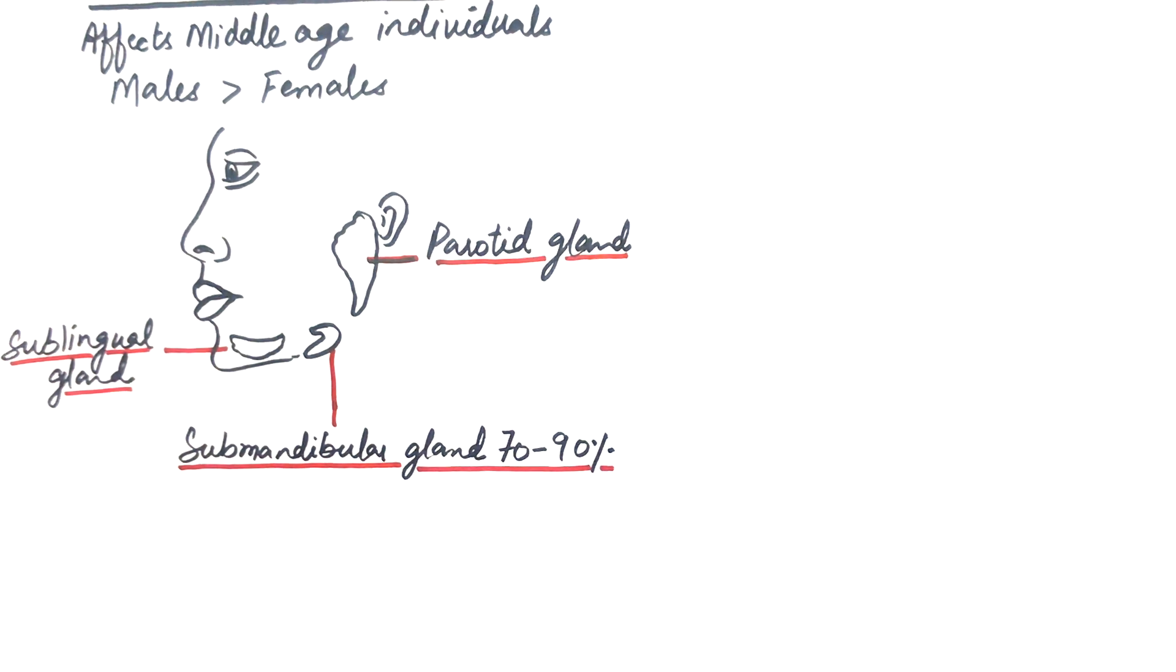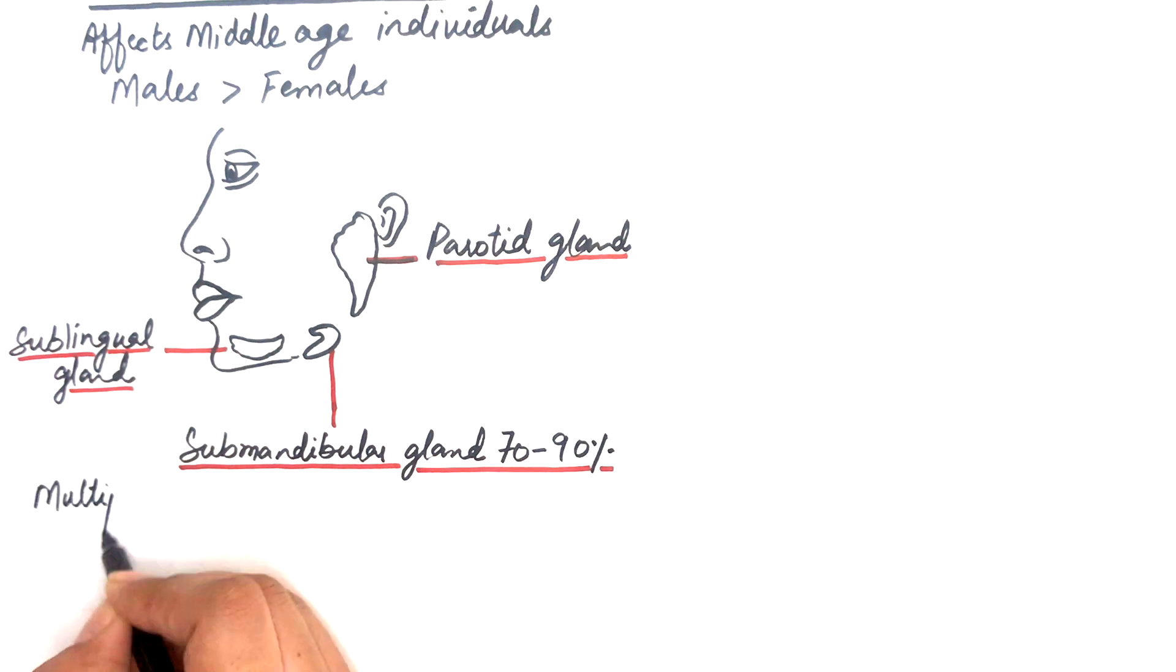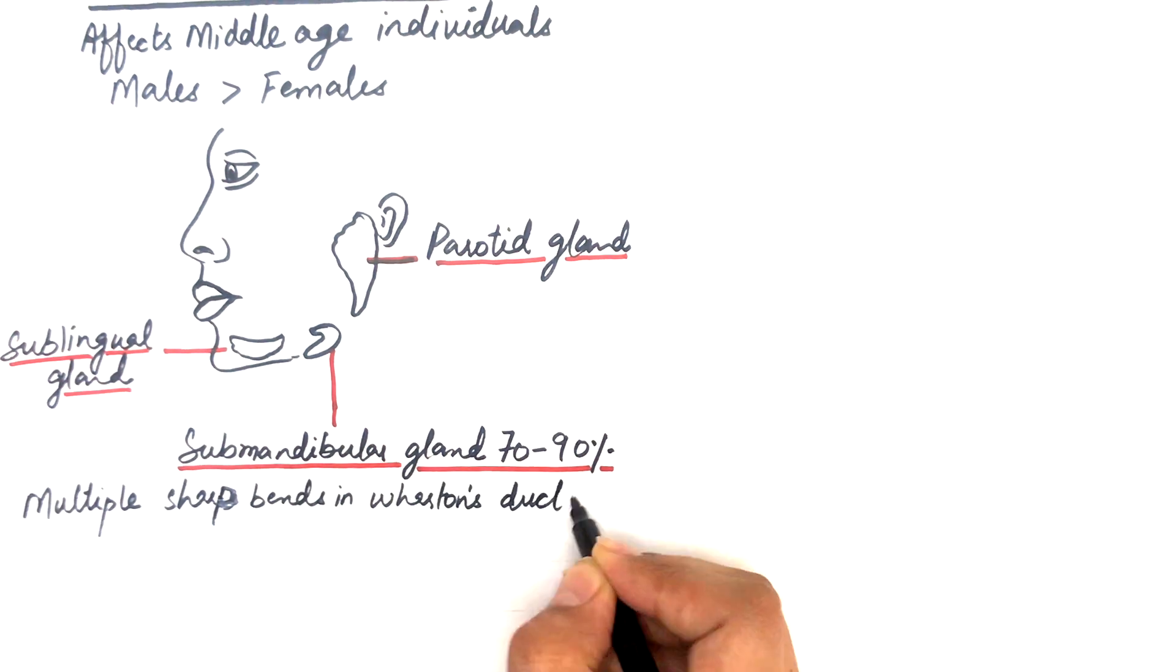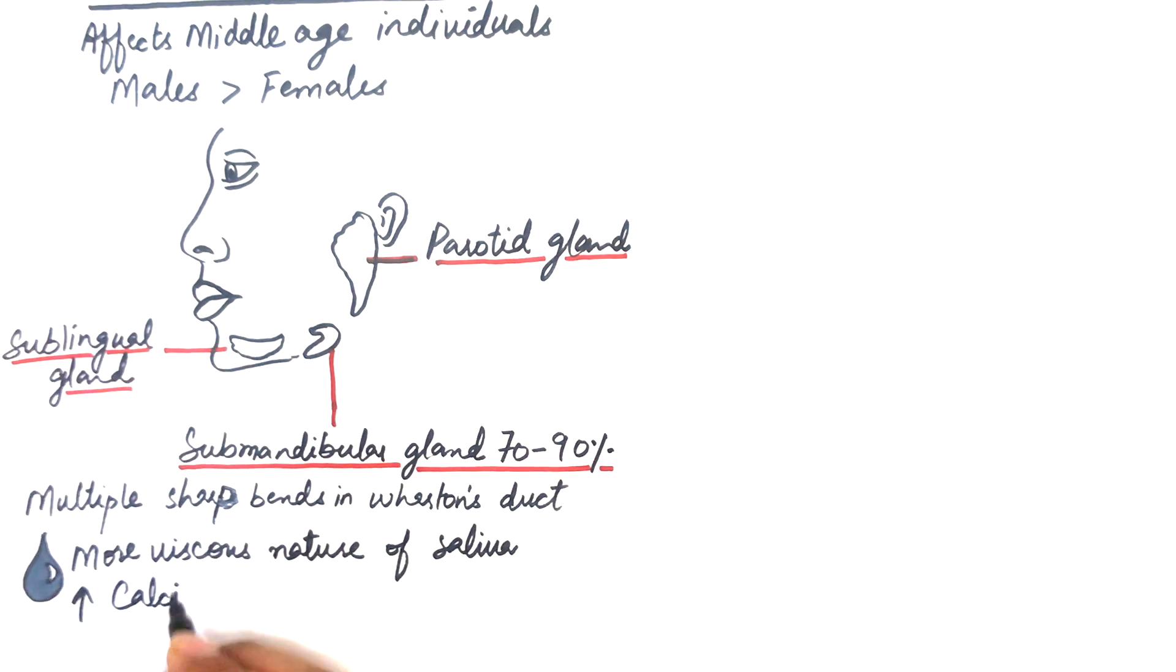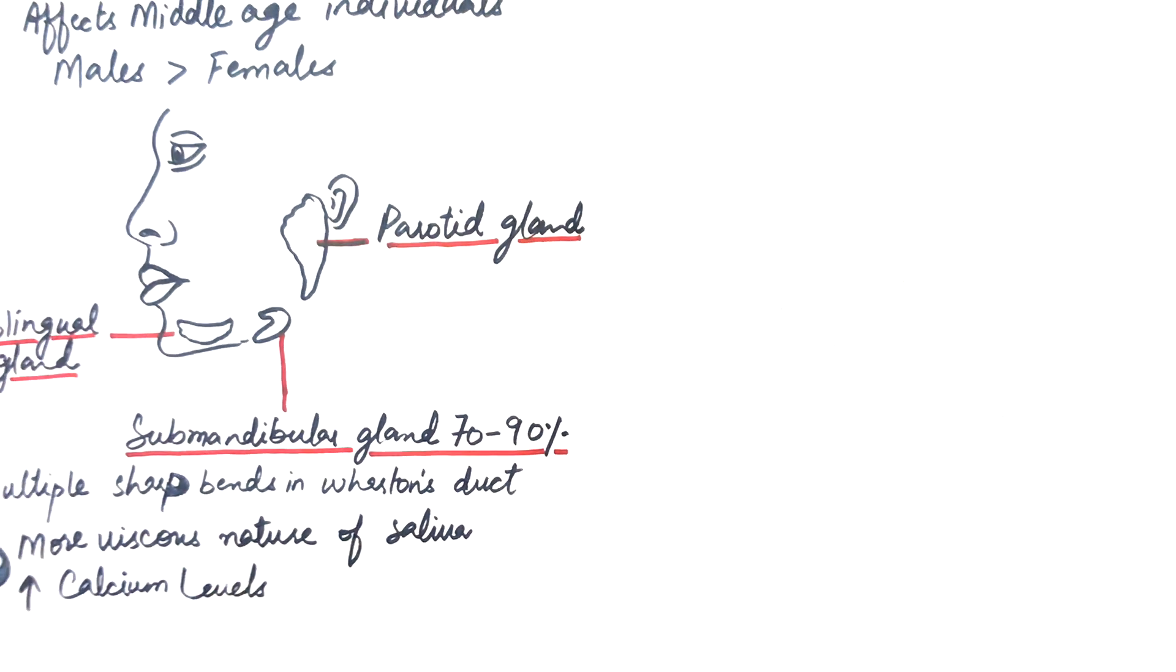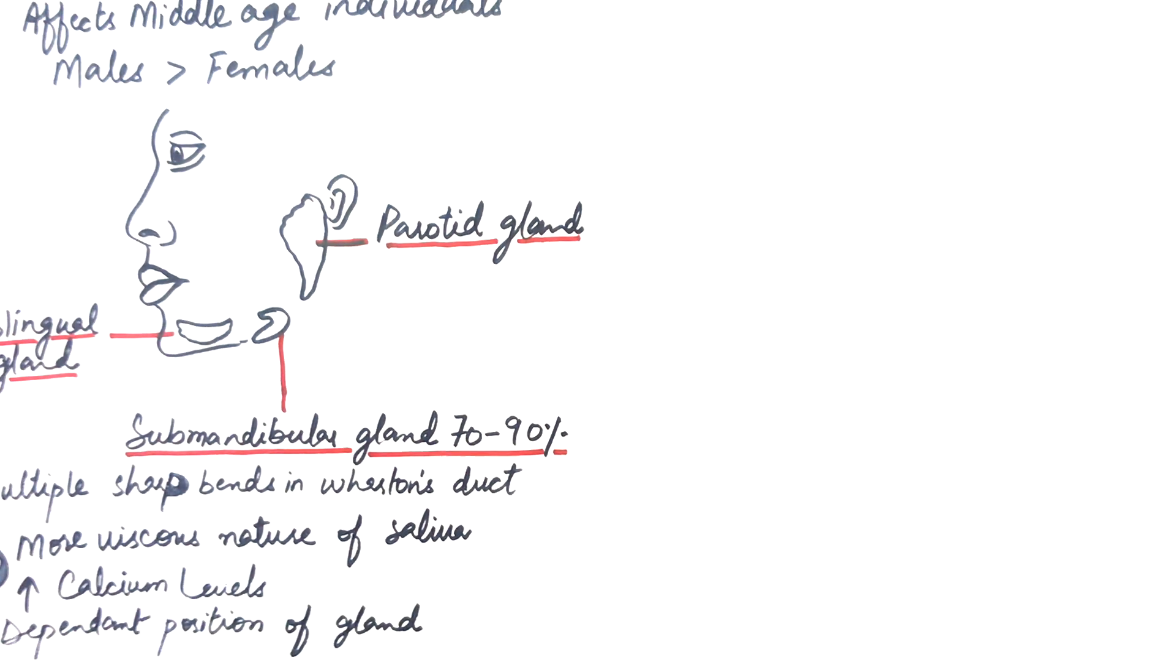The reasons why these stones or sialoliths are formed most frequently in the submandibular gland include: multiple sharp bends in the submandibular or Wharton's duct, more viscous nature of saliva of this gland compared to other major glands, the higher calcium levels in saliva of this gland, and the dependent position of the gland which often increases the chance of stasis of saliva in the submandibular duct.